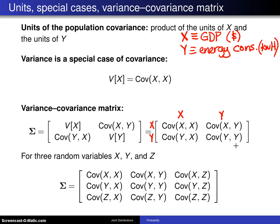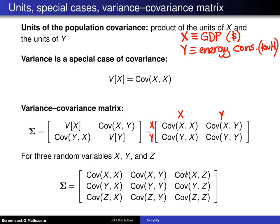If you extend this covariance matrix to three random variables X, Y, and Z, you get the variance of X, variance of Y, and variance of Z on the diagonal, and on the off-diagonal positions you get the various covariances. This matrix is also a symmetric matrix.